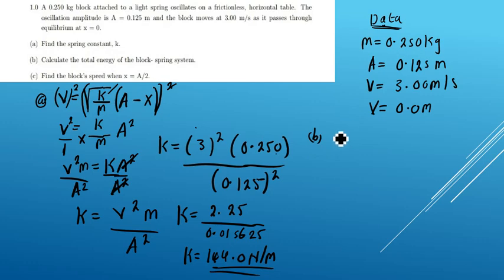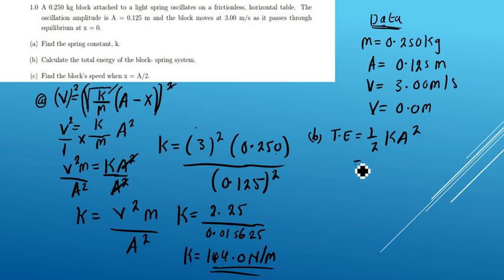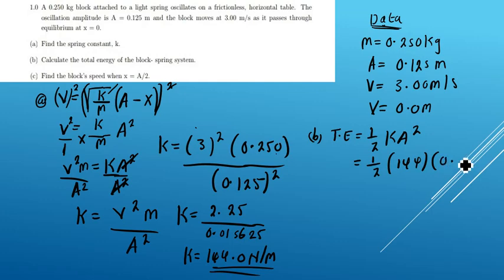For part B, we calculate the total energy. The total energy is given by one-half times k times a squared. Our spring constant is 144 N/m and our oscillation amplitude is 0.125 meters squared.